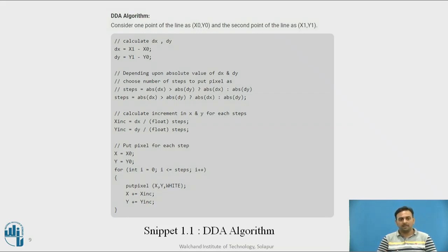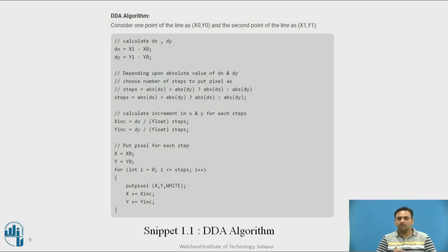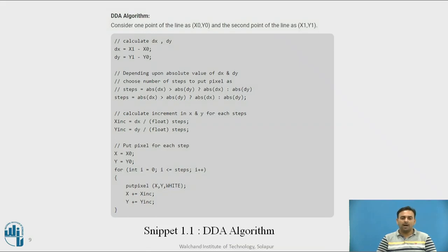Based on the steps, we calculate the x increment value and y increment value — meaning at each step, by what amount we should increment the x coordinate and the y coordinate. This is calculated before entering the actual loop. We start from x0, y0 values, so x is assigned x0 and y is assigned y0. In the loop, from the first coordinate to the last, we mark the x, y coordinate and move forward by incrementing x and y values to jump to the next pixel.